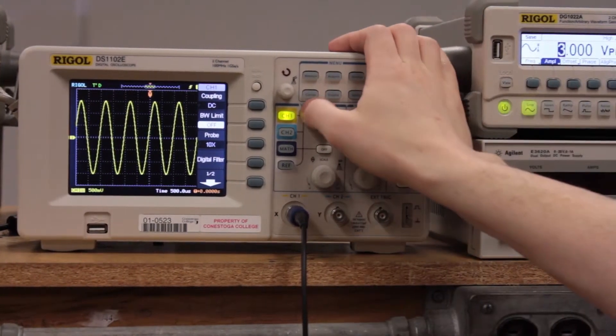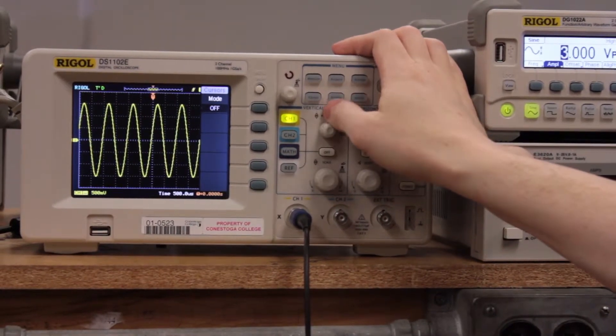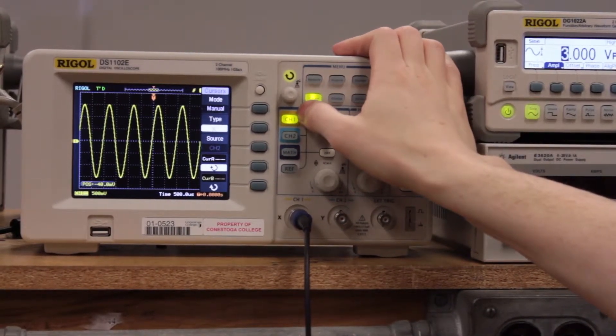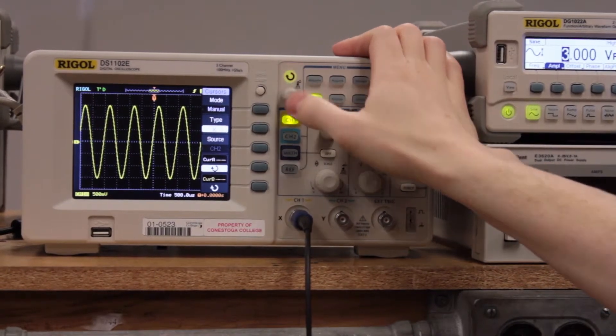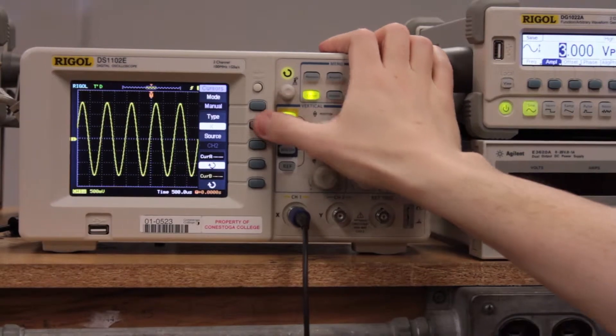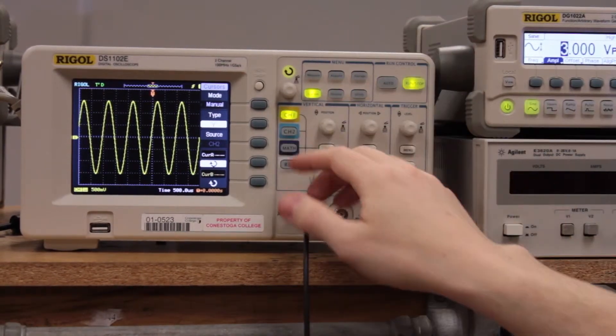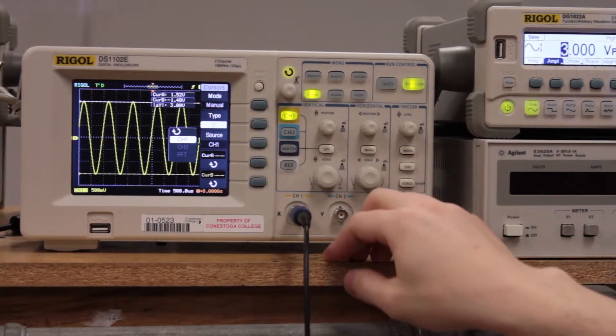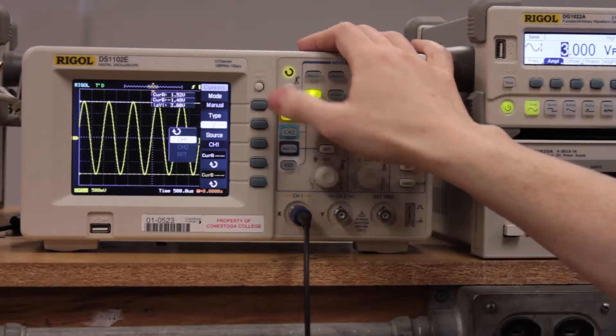Now to measure with the cursors we're going to hit cursor. We're going to hit it again to turn it on, and we want Y, and we're going to change that to channel 1 and that's great.